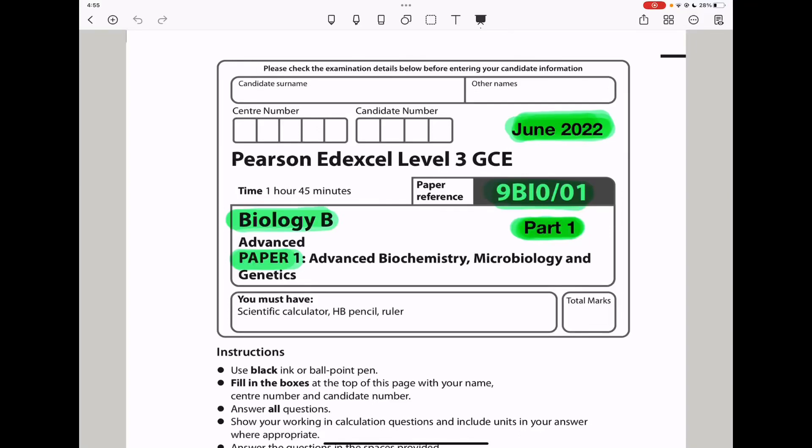Welcome to the Chemistry, Biology, and Math Revision Hub. Today we are doing the Pearson A Level 3 GCE, Paper 1, Biology B for June 2022. This is the Part 1 video. I'll put the links to the Part 2 and Part 3 videos below in the description box.